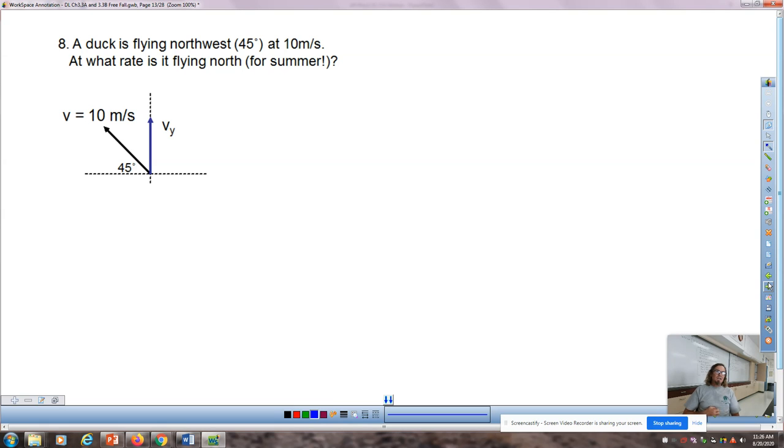Question number 8: a duck is flying northwest at 10 meters per second, 45 degree angle, and we want to know at what rate is it flying north. It's got to get from Central Mexico to Canada. You're going to probably be following paths that lead you to different water sources, but in the end, you've got to get north. We need to know what is the component of velocity in the Y direction. Based on the angle that I have here, if I were to put the Y component on this side, I'm still using sine.